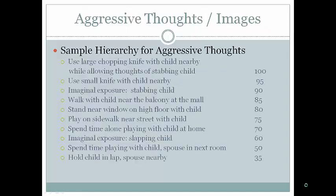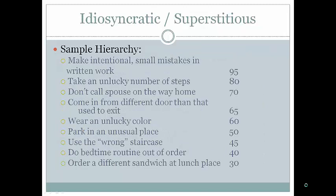A sample hierarchy for aggressive obsessions includes: hold child while a bus is nearby; spend time playing with child's bus in the next room; imaginal exposure to slapping the child; spend time alone playing with child at home; play on the sidewalk near a street; stand near a high-floor window with the child; walk with child near a mall balcony; imagine stabbing the child; use a small knife near the child; use a large chopping knife nearby while allowing thoughts of stabbing. The therapist must ensure the person is not psychotic — people with OCD in this form rarely act on these thoughts. Hierarchies can also address superstitious or idiosyncratic thoughts, such as doing a bedtime routine out of order, wearing an unlucky color, or making intentional small mistakes in written work.